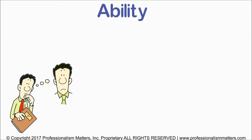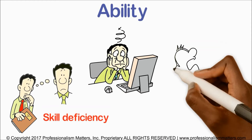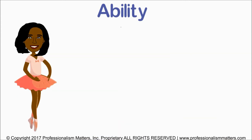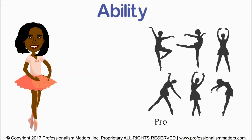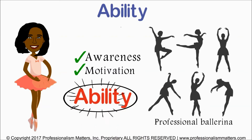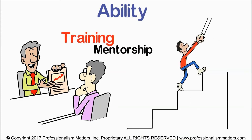Second, ability. If the team member has awareness of a skill deficiency but they don't have the ability to perform the skill, even if they're motivated to, they may be quite frustrated. Take myself for an example: I may be aware that I can't dance well enough to become a professional ballerina at 46 and desperately want to dance professionally, but awareness and motivation aren't enough — I must also have the ability. In this case, training or mentorship may be the appropriate course of action.